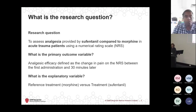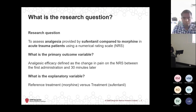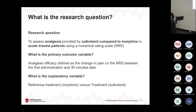All research projects have a research question — part of your protocol submitted to ethics. For this presentation, we're going to answer the following research question: we're going to assess analgesia provided by fentanyl compared to morphine in acute trauma patients using a numeric rating scale, or NRS. Using the PICO acronym: our population is acute trauma patients, our treatment is fentanyl, our control is morphine, and our primary outcome is defined as a change in pain on the NRS between first administration and 30 minutes later.